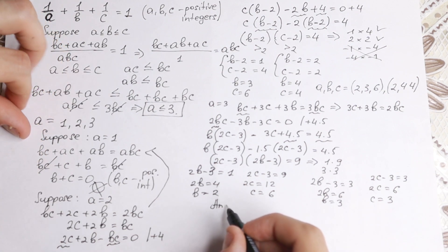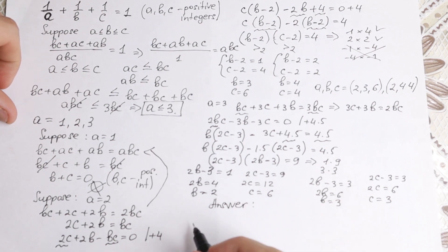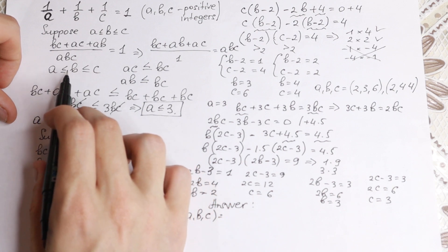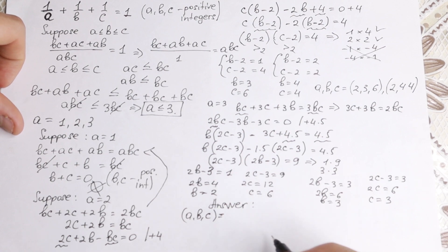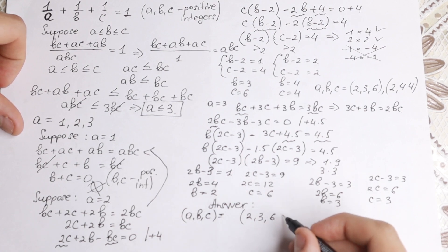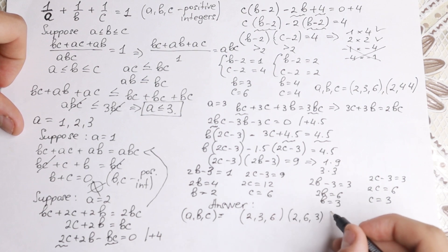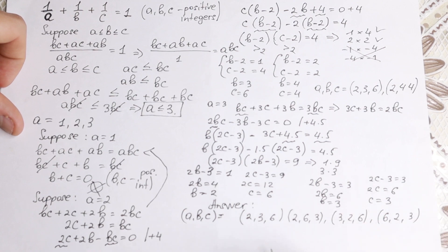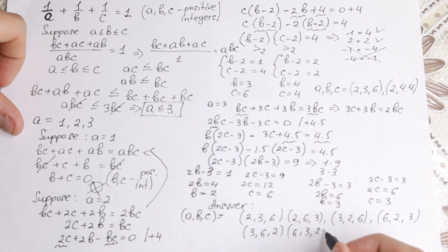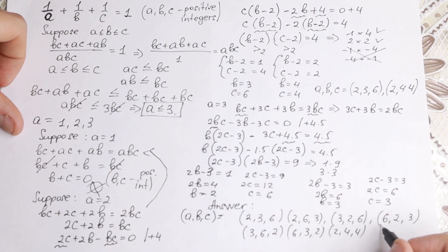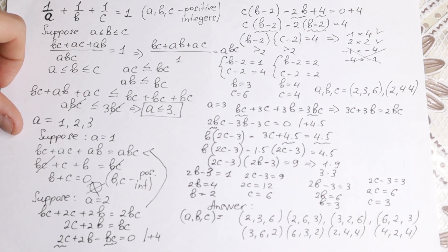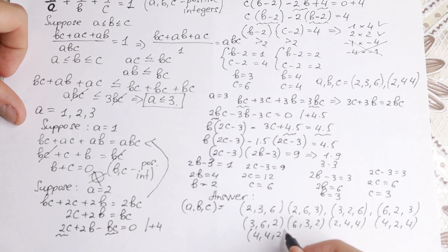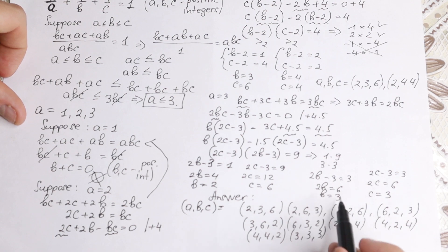Now let's write all the solutions. Since we assumed a ≤ b ≤ c, we need to list all permutations. The pairs are: (2, 3, 6), (2, 6, 3), (3, 2, 6), (6, 2, 3), (3, 6, 2), (6, 3, 2), (2, 4, 4), (4, 2, 4), (4, 4, 2), and (3, 3, 3).